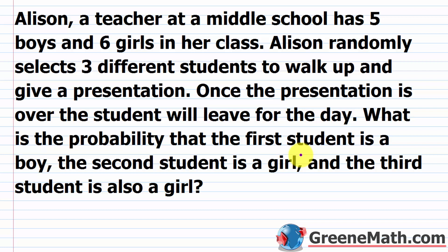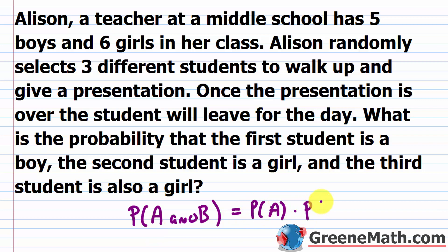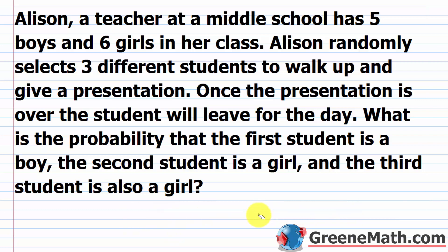We're still going to multiply the probabilities together, but we use a different formula for dependent events. The probability of A and B, if they are dependent, is the probability of A times the probability of B given that A has happened. In this case, we extend this to three events: the probability the first student is a boy, then given that, the probability the second is a girl, and then given both of those, the probability the third is also a girl. Because you hear 'and,' you're still thinking about multiplication.